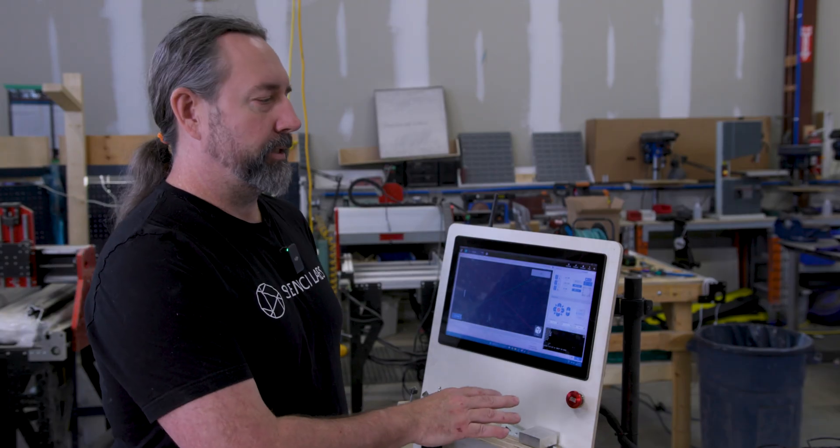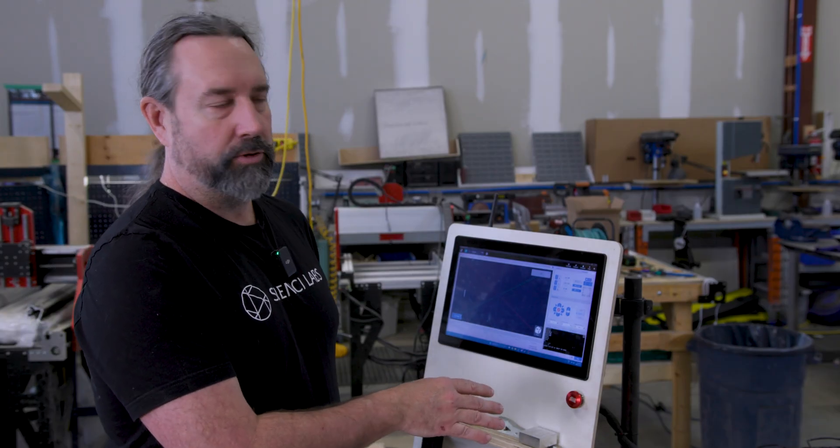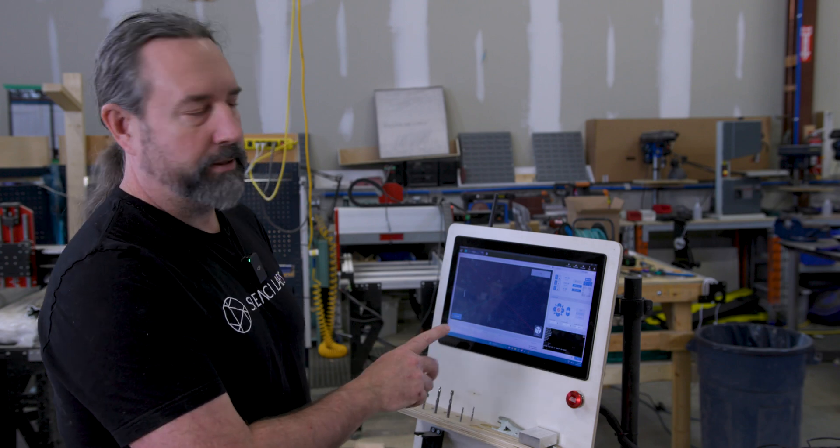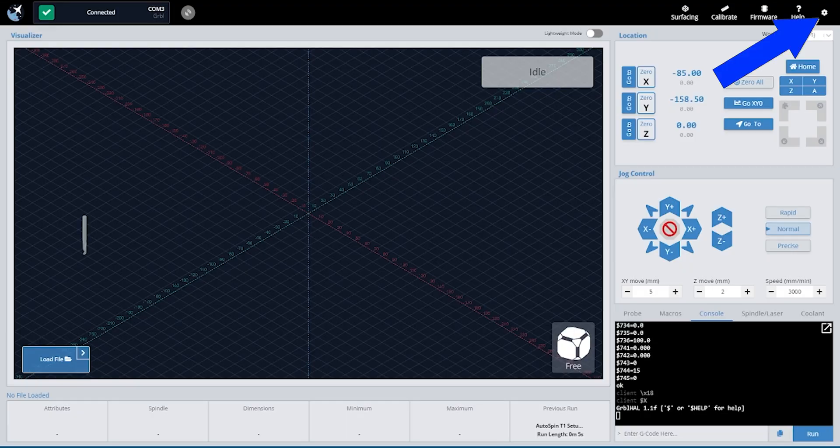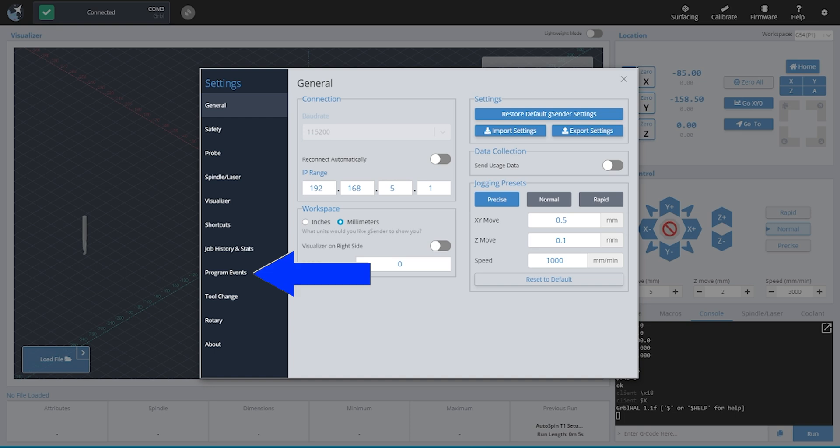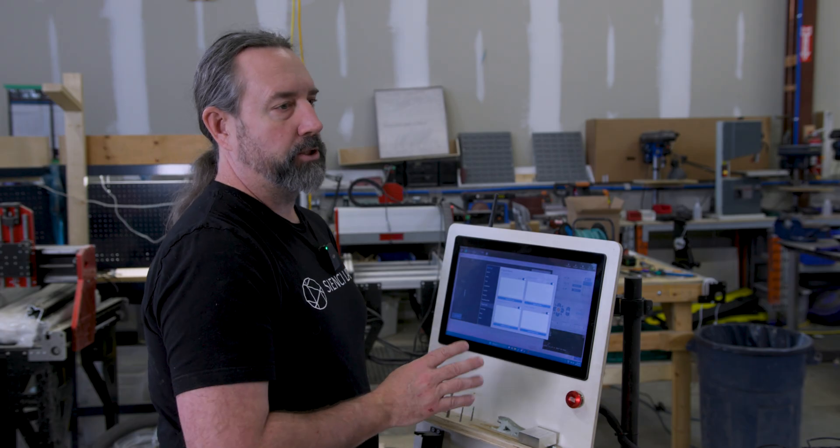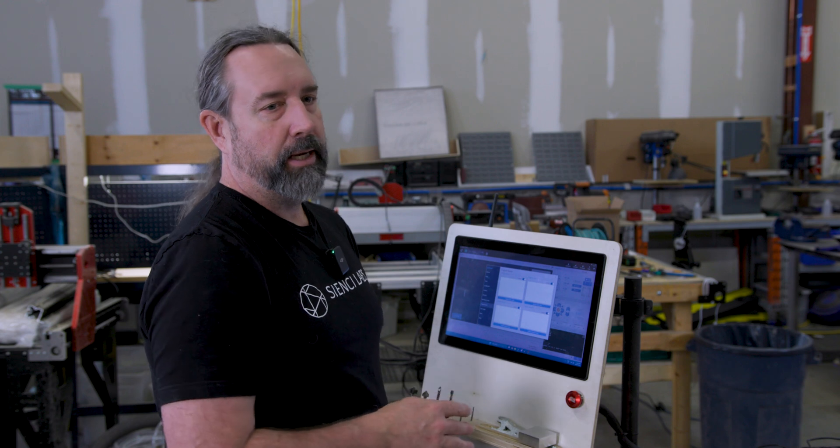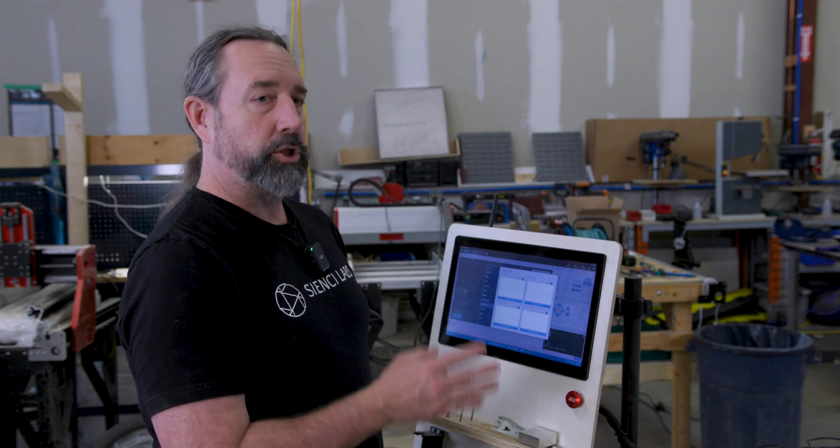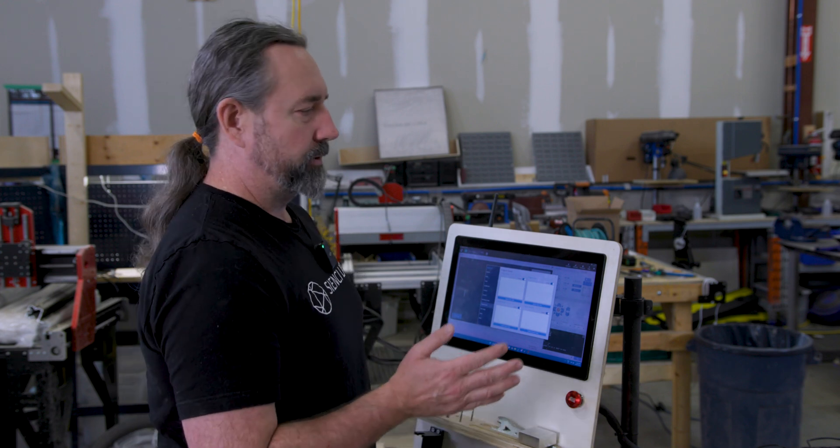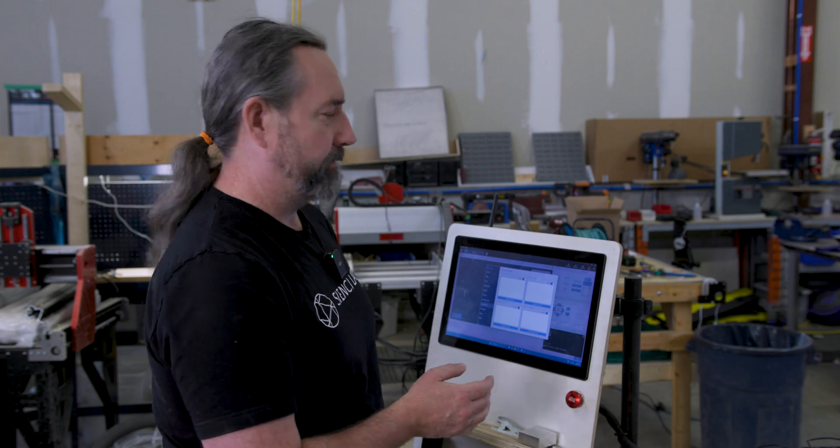Now that we've got everything wired into the control board, we're going to move on over to G-Sender to do the magic part. We're going to get into our settings and go down into program events. This will allow us to turn on the flood port when we start our job and turn off the flood port when we're finished. So that will start the vacuum and turn off the vacuum.